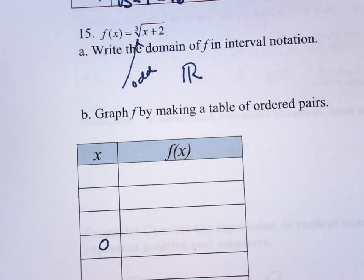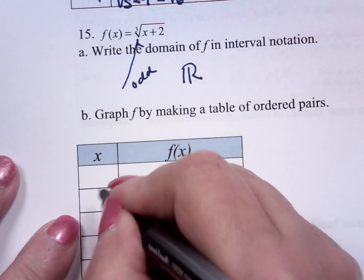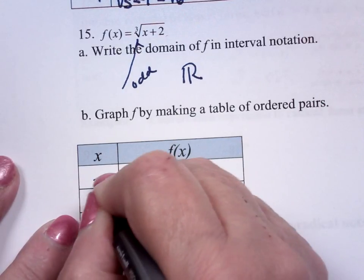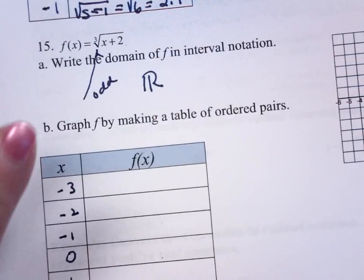So this is 0, negative 1, negative 2, negative 3, 1, 2, 3. Hopefully that gives me enough coordinate points.